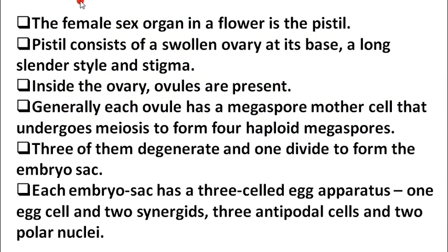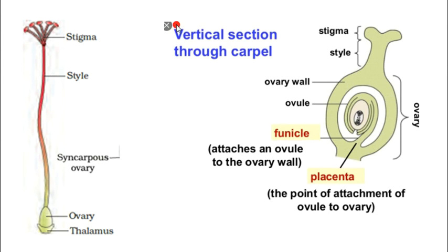The female sex organ in a flower is called the pistil. The pistil consists of a swollen ovary at its base, a slender style, and a stigma. You can see the stigma, style, and ovary here. Inside the ovary is the ovule, which becomes the seed, and this ovary becomes the fruit. So the ovary converts into fruit and the ovule converts into the seed.